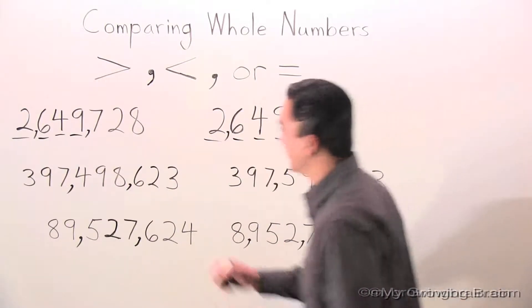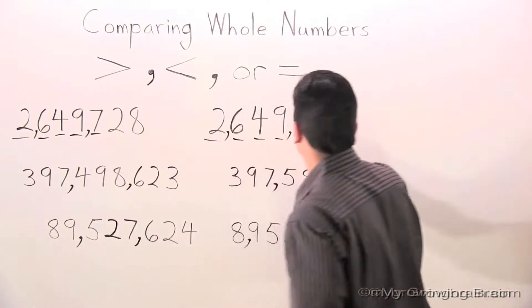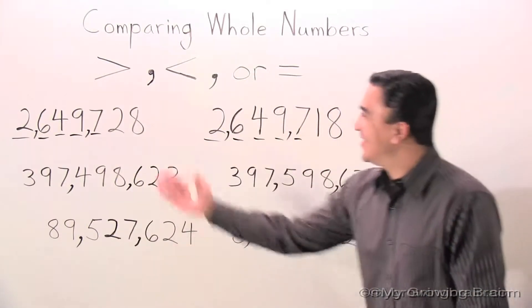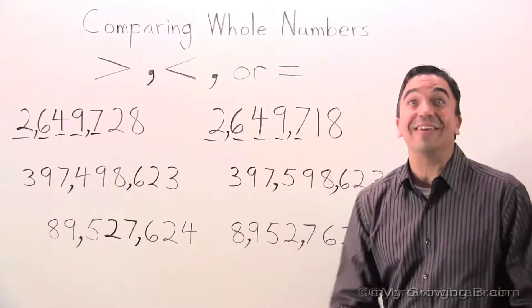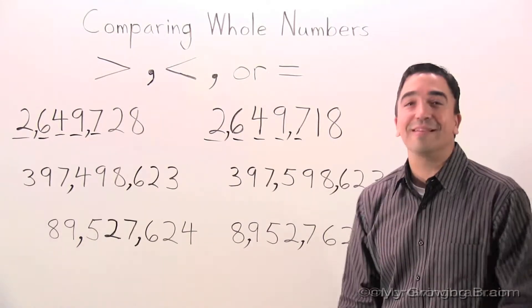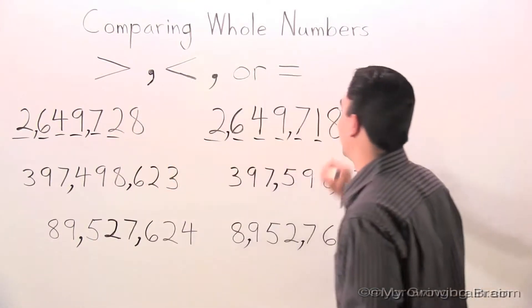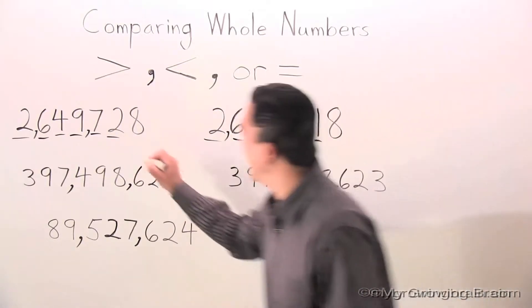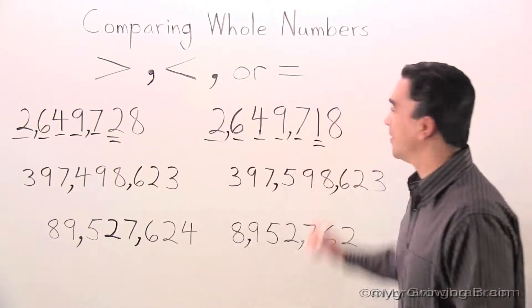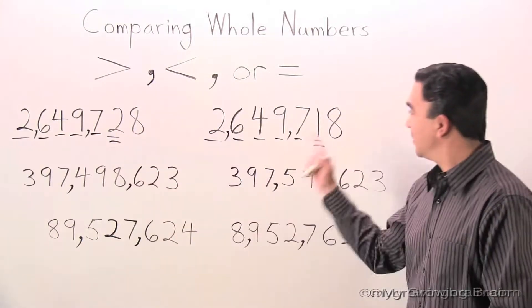Move to the hundreds. 7, 7. Still the same. Let's go to the tens place. What do you know? We have a difference. 2, 1.